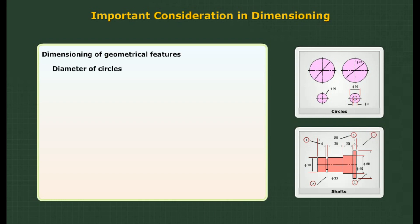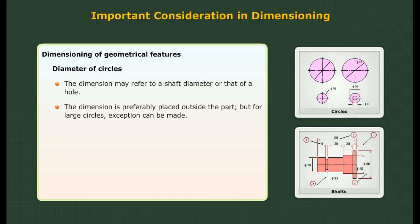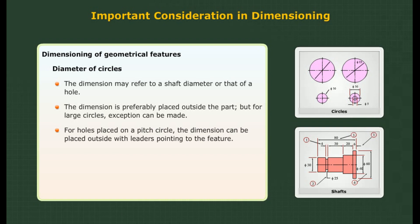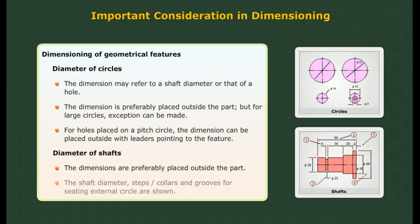Dimensioning of geometrical features — Diameter of circles: The dimension may refer to a shaft diameter or that of a hole. The dimension is preferably placed outside the part, but for large circles exceptions can be made. For holes placed on a pitch circle, the dimension can be placed outside with leaders pointing to the feature. Diameter of shafts: Dimensions are preferably placed outside the part. Shaft diameter steps, collars, and grooves for seating external circles are shown. Note that groove size, width, and diameter are placed in unconventional method due to space restriction.